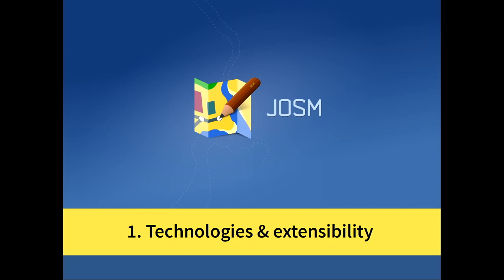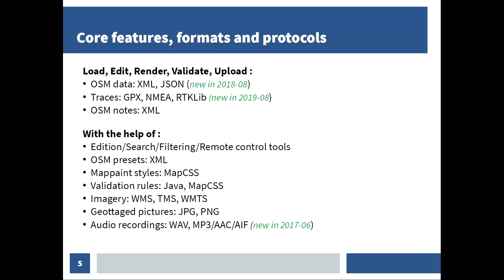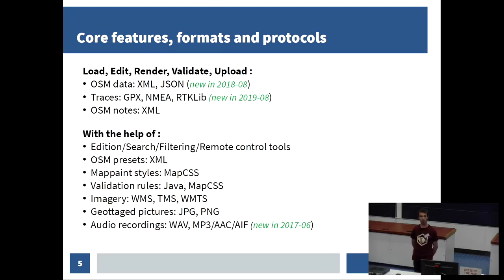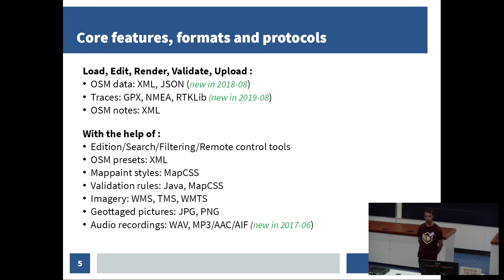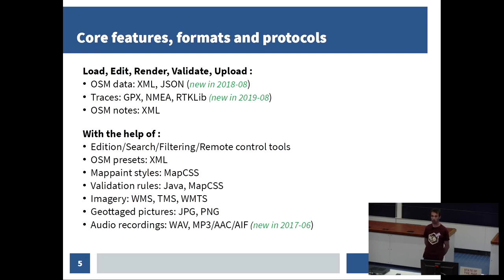If we sum up JOSM and what it does: as an editor, its main goal is to load, edit, render, validate, and upload different kinds of data related to OpenStreetMap. I'm talking about OSM data itself with the original XML format, and since last year, we support an alternative JSON format. We also support traces with the original GPIX format, and since last month — this is quite new — we support RTK-lib, which is a high precision centimetric format.